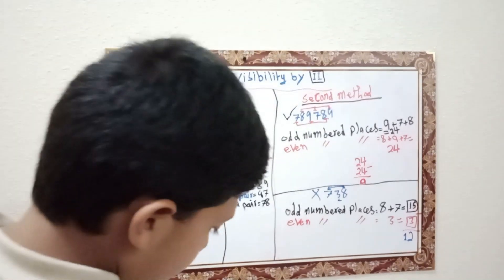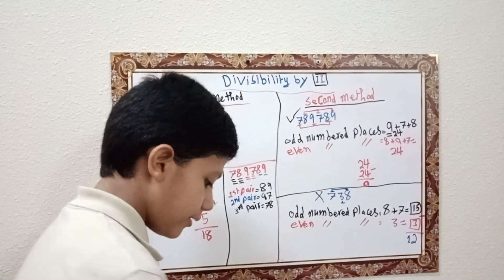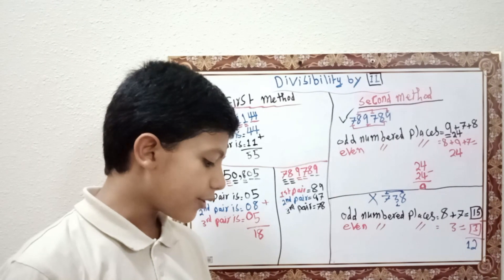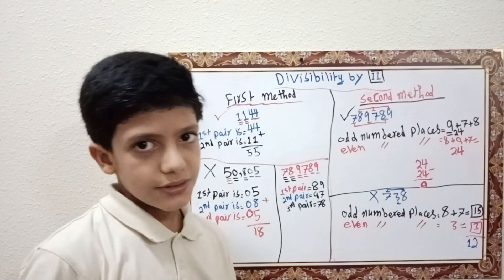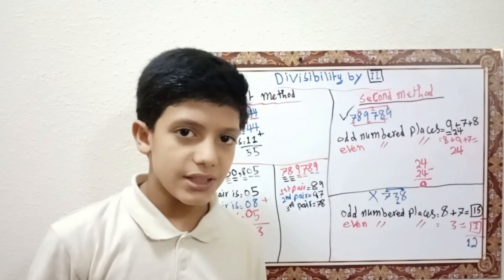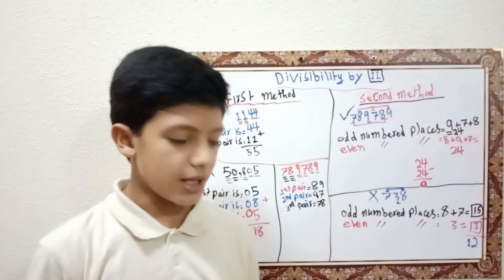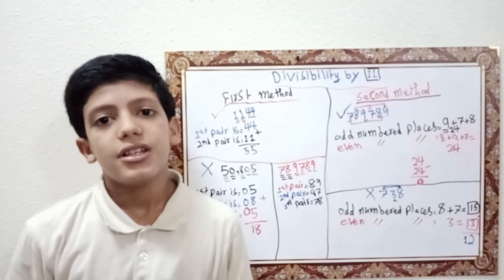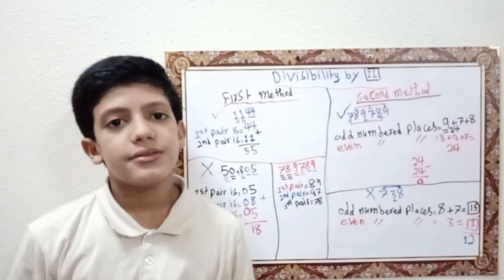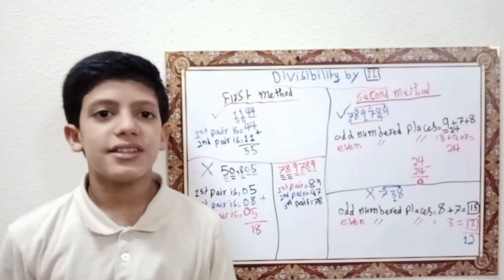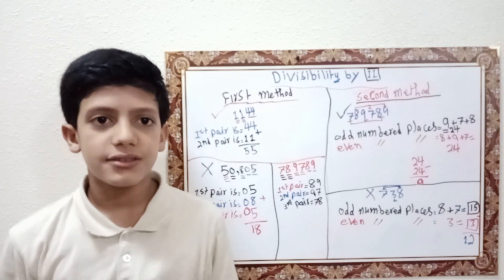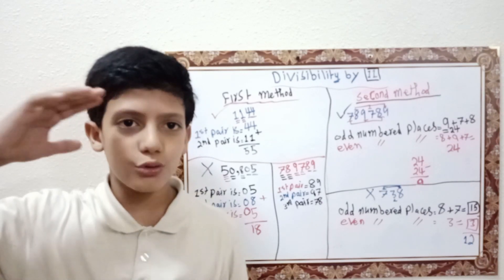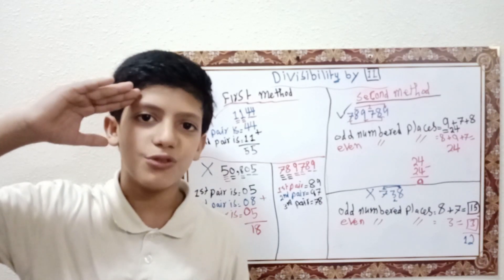Because we said, if the result is 0, or 11, or a multiple of 11, then the number can be divisible by 11. Now we finish these two methods and we understand them. You can choose the method you like and write your opinion in the comments. We don't say goodbye, but see you at a new meeting.